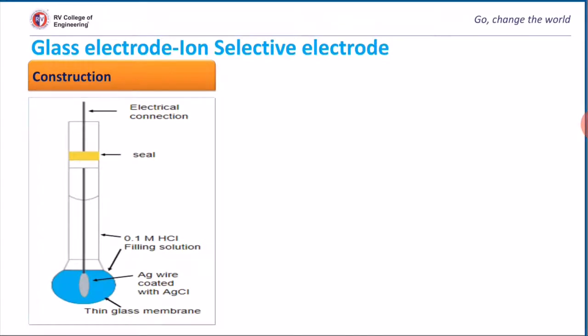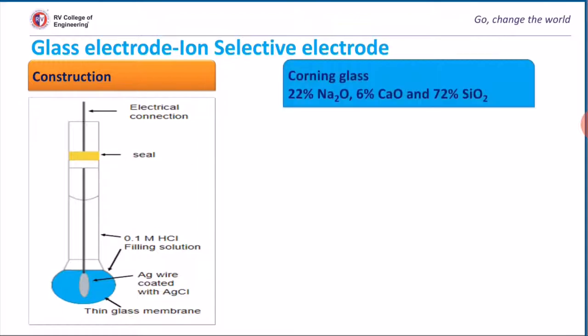It consists of a long glass tube having a bulb at the bottom. This bulb is made up of a special glass containing 22% sodium oxide, 72% silicon dioxide, and remaining percentage calcium oxide. The bulb is filled with 0.1 molar hydrochloric acid solution. A silver-silver chloride electrode dipped in the solution provides electrical contact and acts as internal reference electrode.